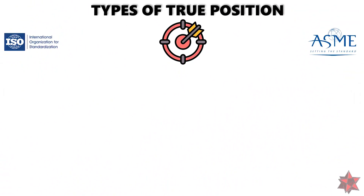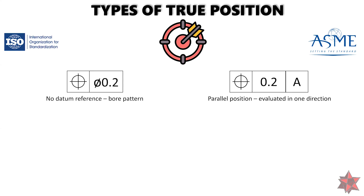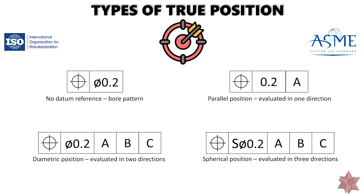According to ISO 1101 and ASME 14.5 we have four types of true position. No datum reference position, also known as bore pattern or best fit position. Parallel true position, where the direction is given by arrows indicating the position tolerance. Diametric true position, where the position has to be evaluated in two directions. And spherical true position, with the S letter near the diametric symbol, implying the position has to be evaluated in three axes.